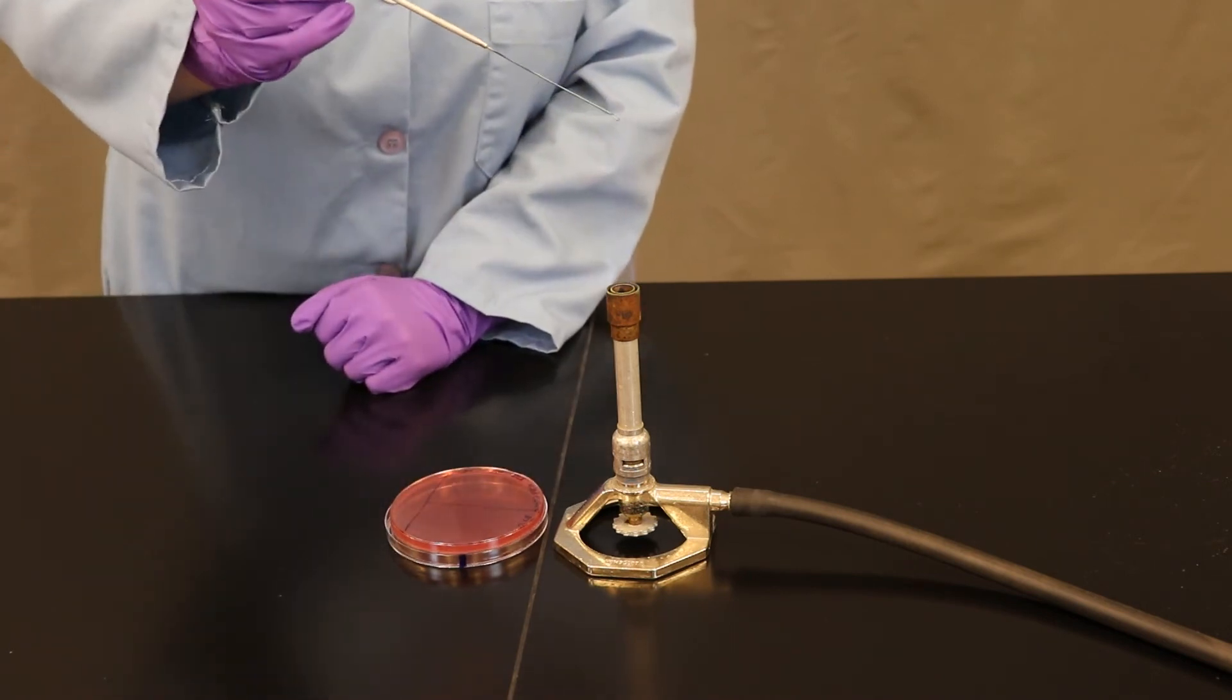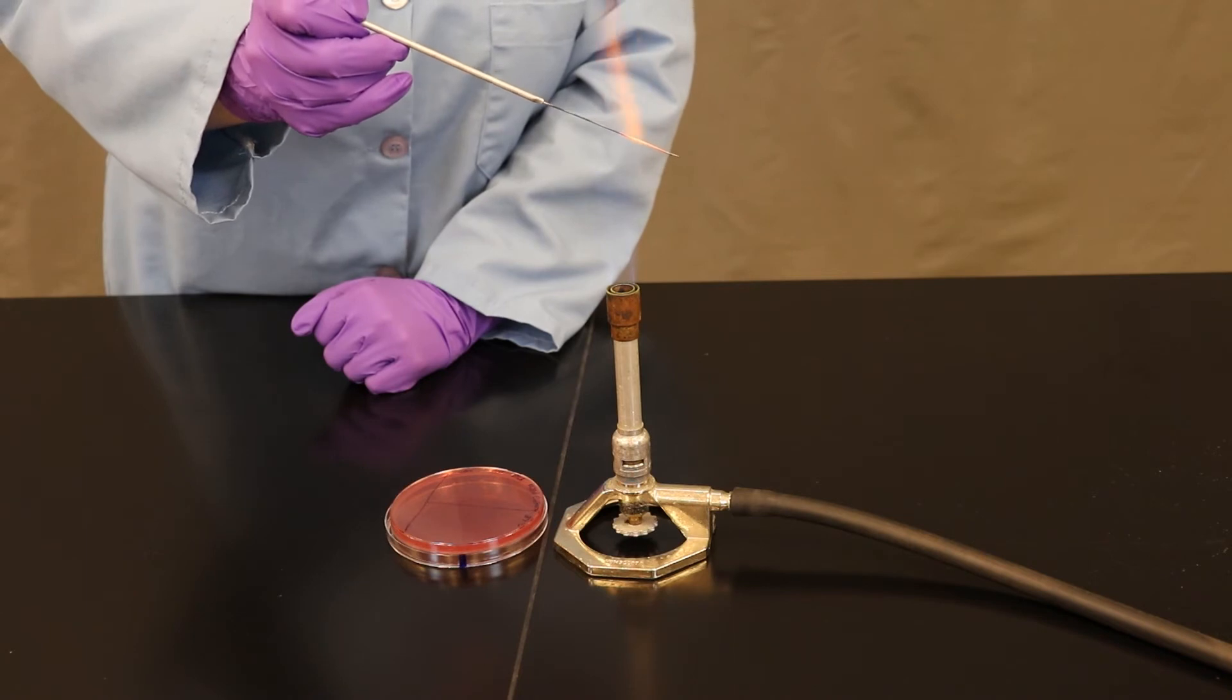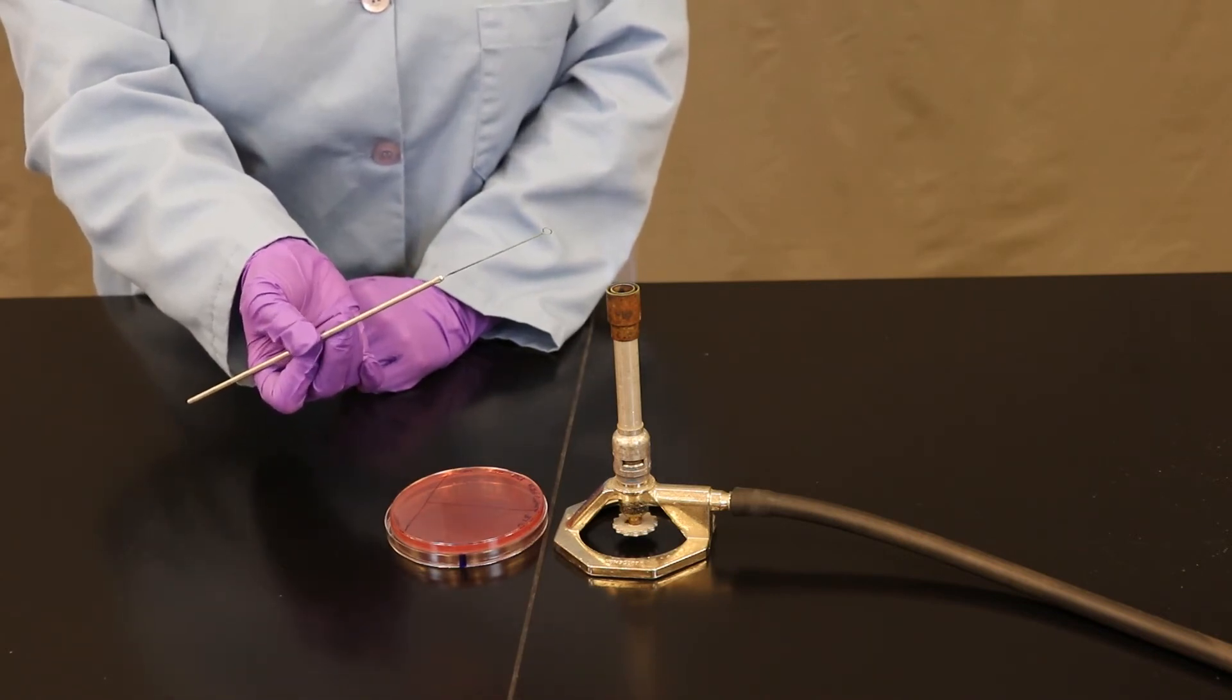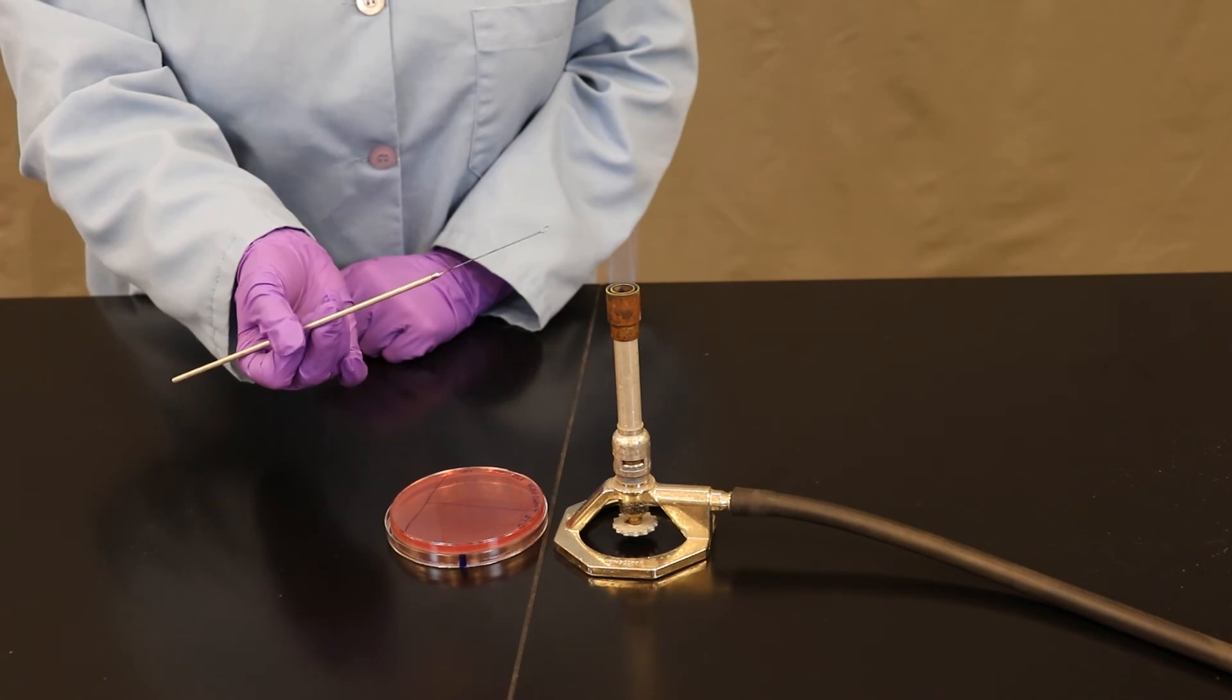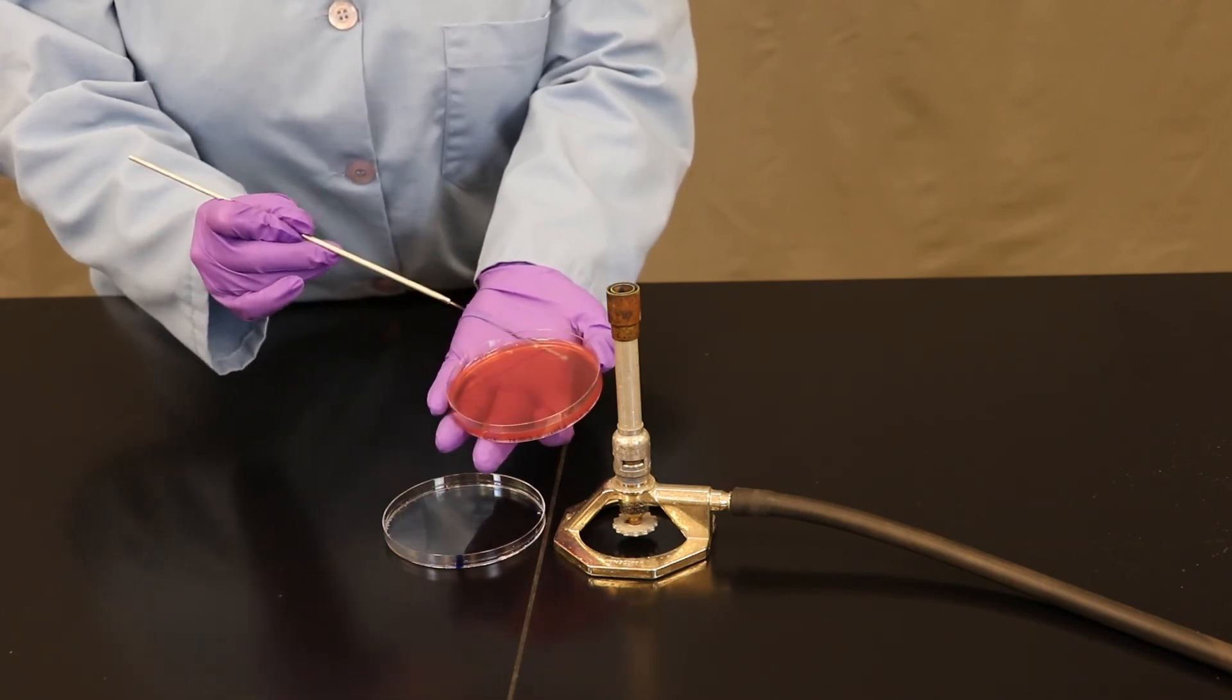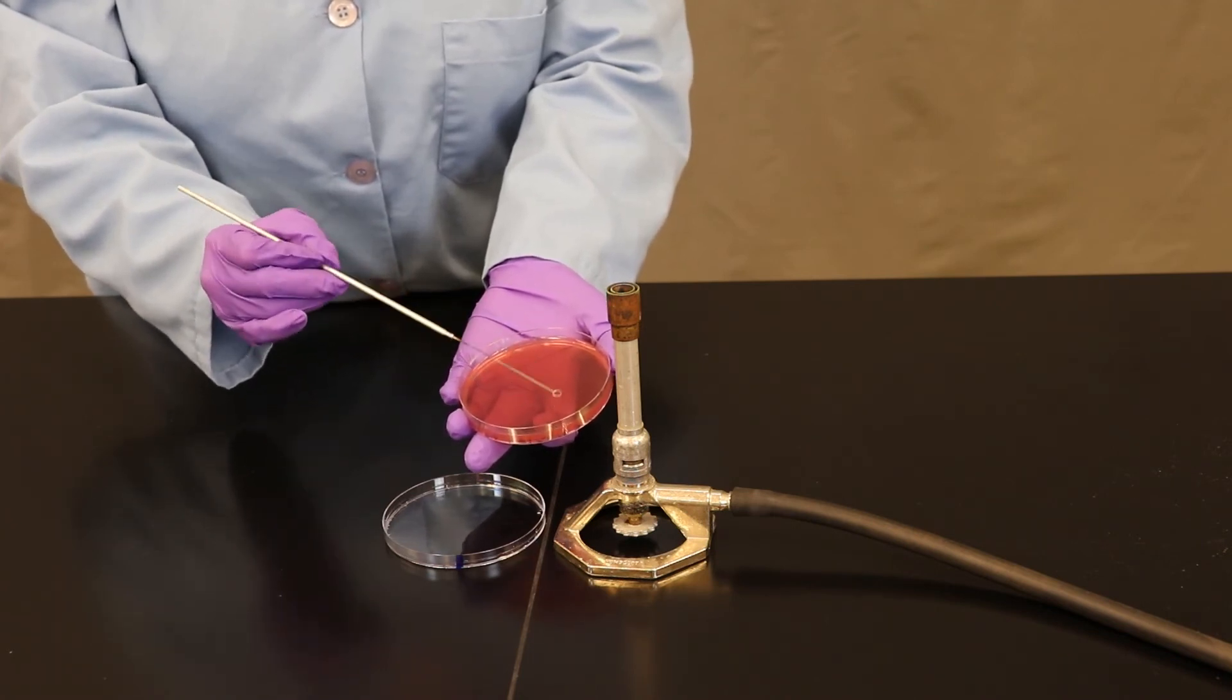Place it on the lid, and one more time we're going to sterilize our inoculating loop. Allow it to cool. Remember, we're not double dipping back into our broth. And now it's really important I'm not going back into this first zone. Now I'm going to grab the bacteria from zone number two, and I'm going to streak it into this last zone that's now empty. Touch it down onto the agar to cool the loop if you wish.